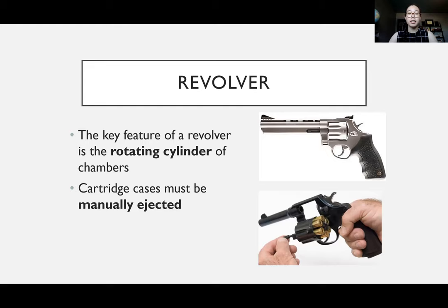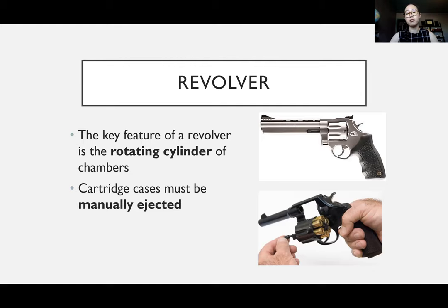The key feature in a revolver is this rotating cylinder of chambers, where your cartridges are stored until they're ready to be fired. An important thing to note about revolvers is that when fired, cartridge cases have to be manually ejected. If someone doesn't eject them after firing in the commission of a crime, those cases aren't available to us as evidence — they remain with the user who has the gun.